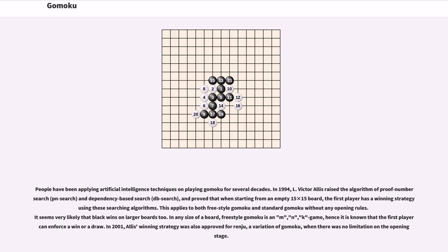It seems very likely that black wins on larger boards too. In any size of board, freestyle Gomoku is an M, N, K game, hence it is known that the first player can enforce a win or a draw.